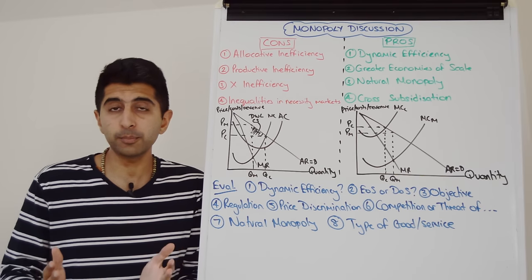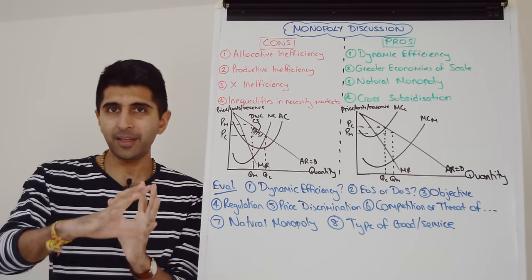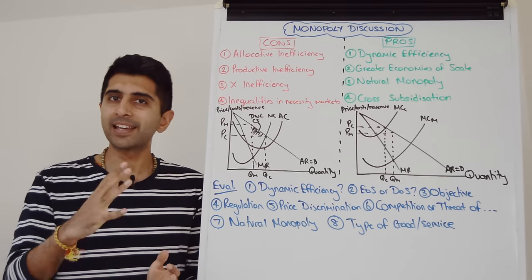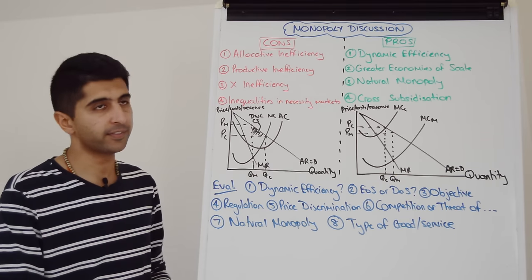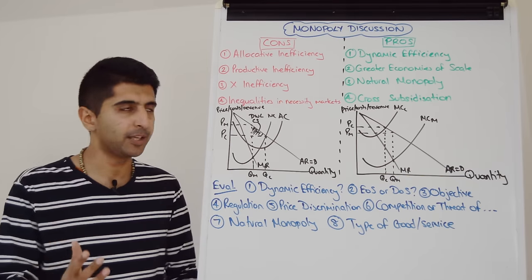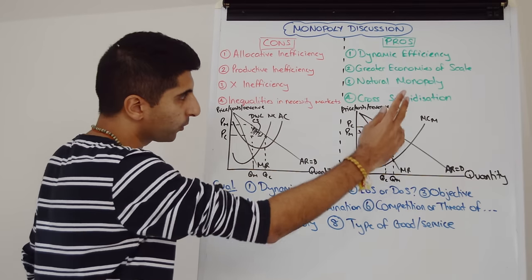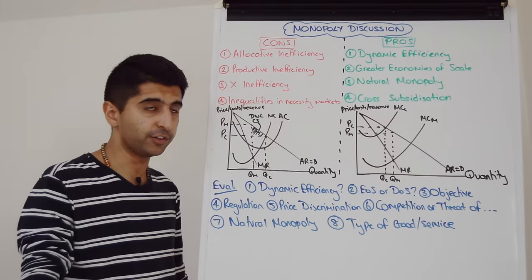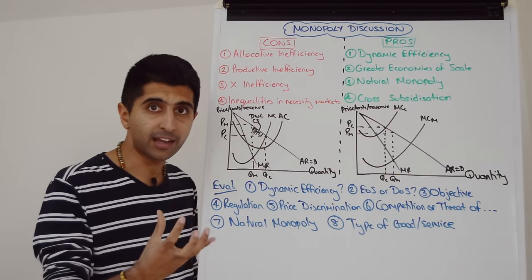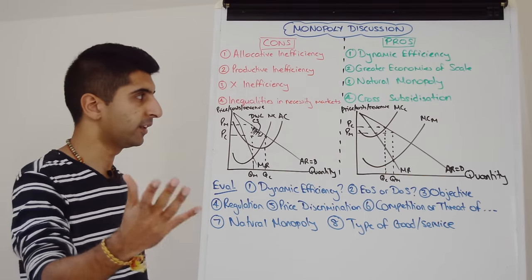They can use their very high super normal profits to subsidize a loss-making good or service that they are also producing but that is socially desirable. Now who knows, monopolies might want to still produce a good or service and if they're making high profits in one area, they can subsidize a loss-making good or service and thus keep it being produced and therefore keep consumers happy in the process. So there are examples where firms do this and that is a benefit for sure. They could only do it if they're making high profits for one good or service in the first place though.